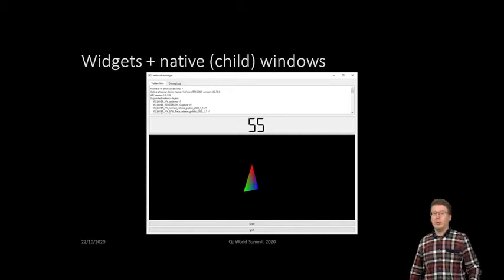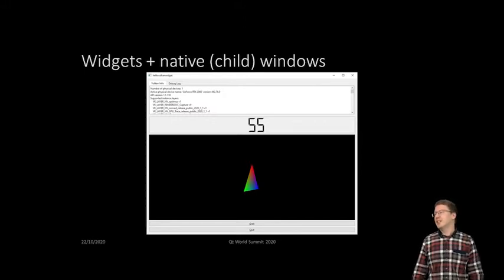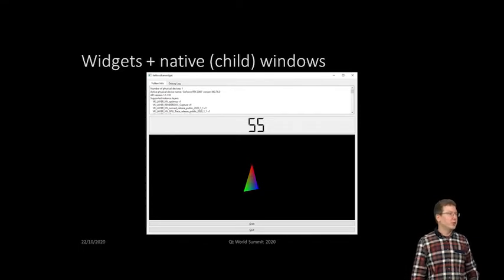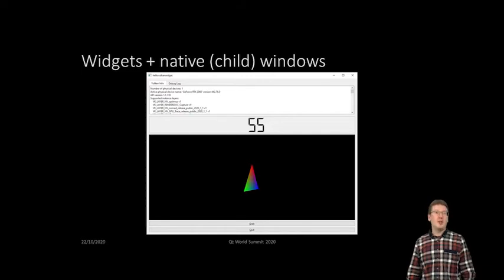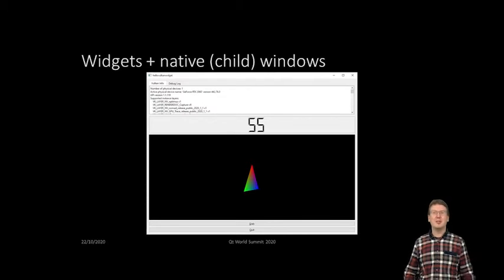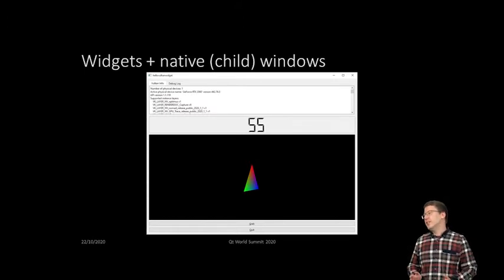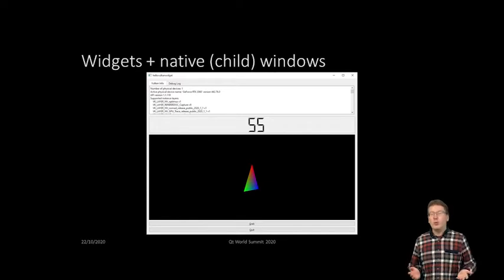This is an important use case for many Qt users and customers, since it's fairly common that you do your 2D controls and elements either with widgets or Qt Quick, but then you have your own 3D world — maybe your own engine — and you want to do something custom, which is done directly with one of the 3D graphics APIs. There's nothing new there, so this can be expected to work as-is in Qt 6.0.